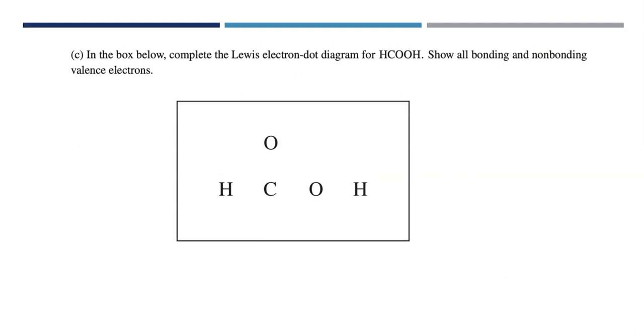It's a multi-part problem. It just keeps rolling along. In the box below, complete the Lewis electron dot diagram for HCOOH. Show all bonding and non-bonding valence electrons. Very important. Got to show all those lone pairs. What's our strategy? The first thing you really want to do is determine the total number of valence electrons in the molecule. We only care about valence electrons. They're the only ones that get involved in bonding. So the carbon has four valence electrons. There are two oxygens, each of them bringing six valence electrons, and two hydrogen atoms, each of them bringing one valence electron. That gives us a total of 18 valence electrons in the molecule. We need to make sure that when we're finished, that 18 valence electrons are represented in our Lewis structure.